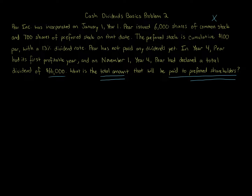One thing to note: the preferred stock is cumulative. That makes it more challenging because you have to worry about arrears. The idea of cumulative preferred stock is that dividends aren't required to be paid out, but if preferred stock is cumulative, you have to look at all the past years where nothing was paid. You have to take into account those past years where dividends should have been paid before common gets anything. We call those amounts 'in arrears.'